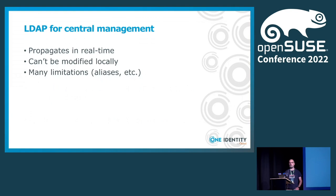Once you have more than just a few systems you want to introduce central management for configurations. Of course you can also use Ansible, Puppet, Salt, or whatever to configure sudo. But there is also a possibility to use LDAP for storing configurations. The advantage of using LDAP is that settings propagate in real time and users cannot modify these settings. On the other hand there are quite a few limitations, like you cannot use aliases and a few more.